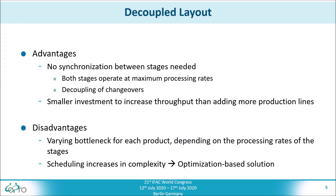This means that the bottleneck of the plant varies from product to product, so none of the two stages can be neglected for the scheduling. This directly ties into the second disadvantage, which is that the scheduling in the case of the decoupled layout increases in complexity, necessitating an optimization-based solution.